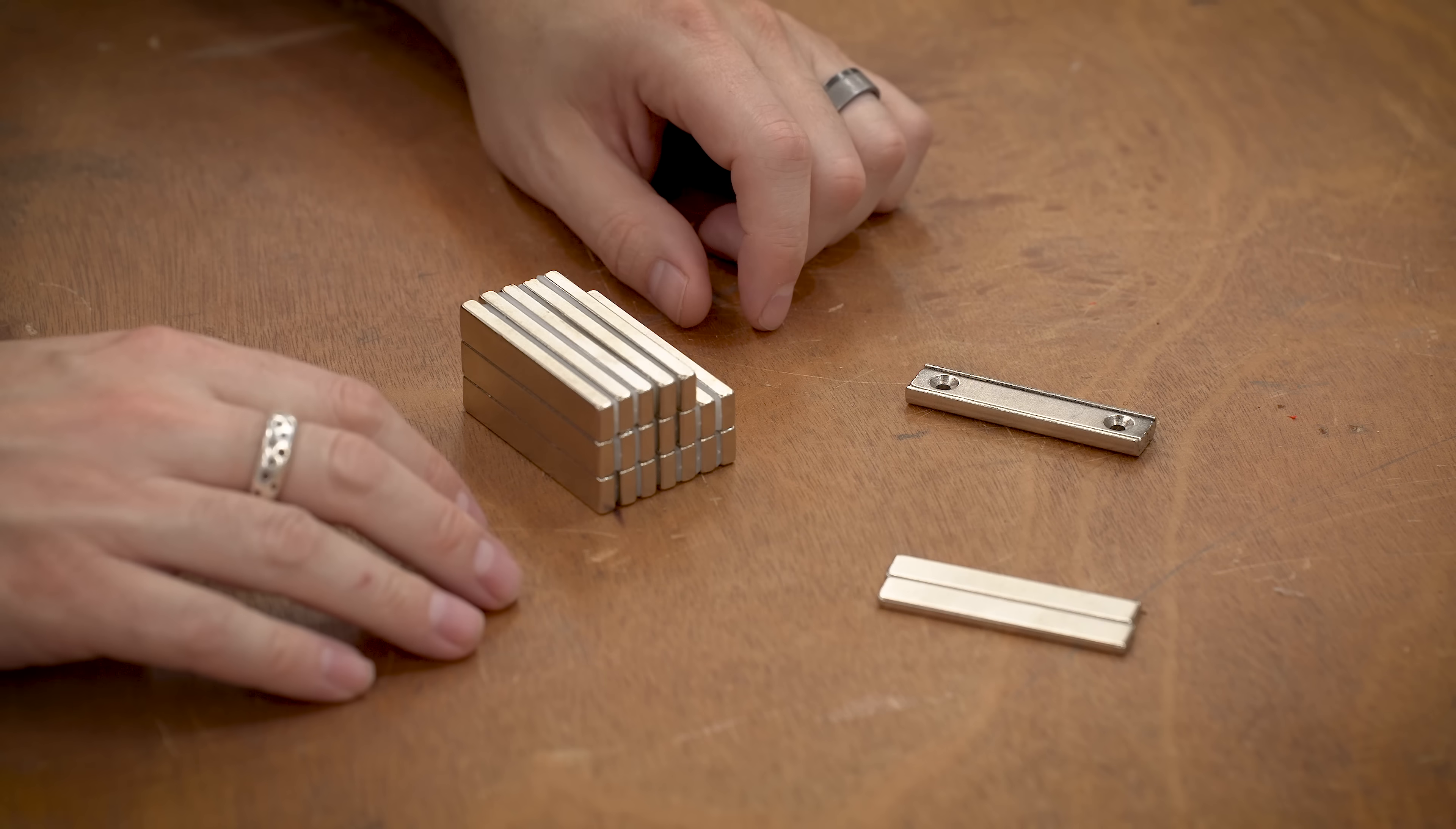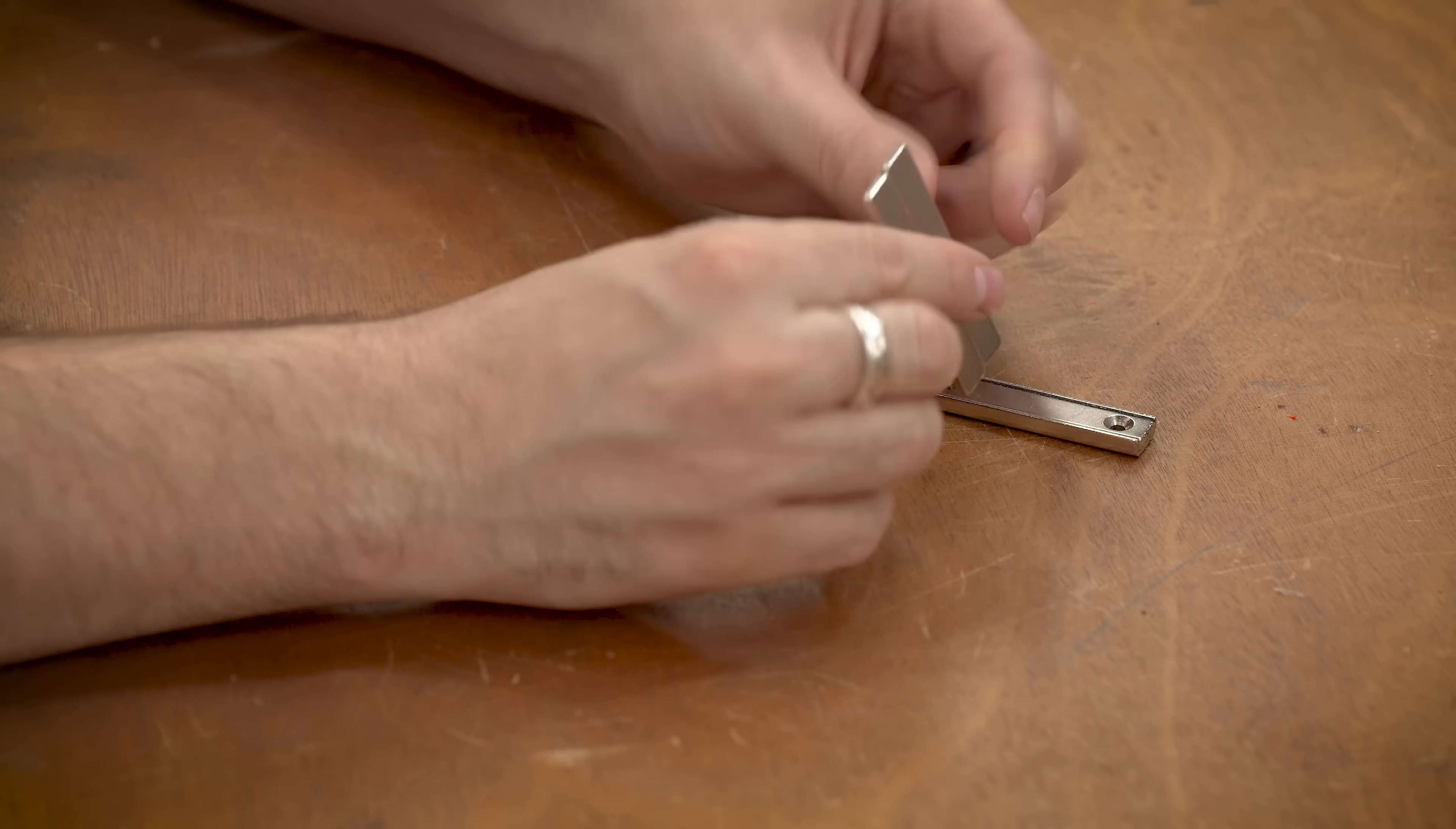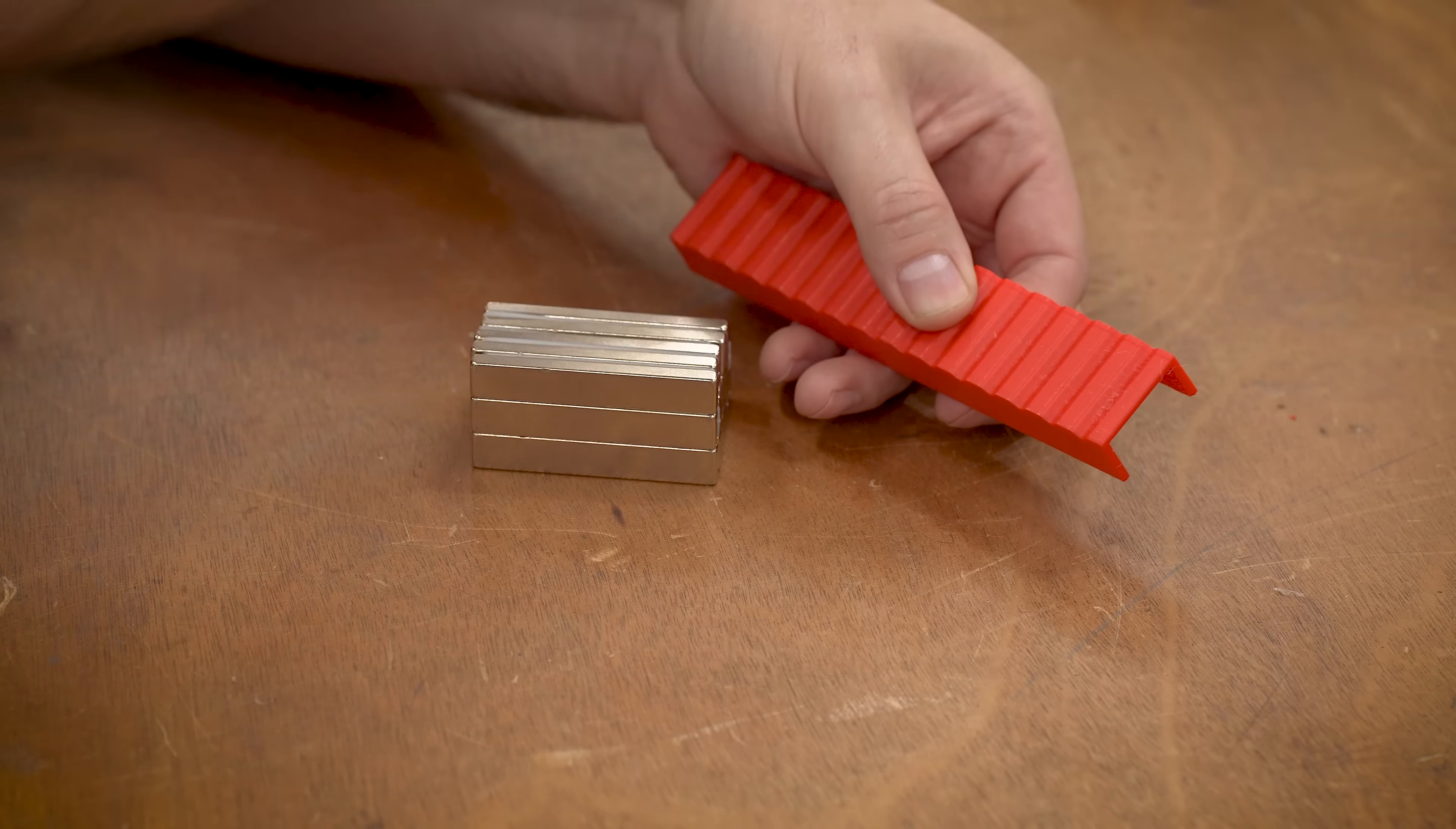As much as I'd love to do a This Old Tony style deep dive into magnets, this video is already 11 minutes and we got a long ways to go. So I tried a few different things. I started out with these, which are 60 by 10 by three millimeters. And if we take two of those and just kind of rest them on the backside.